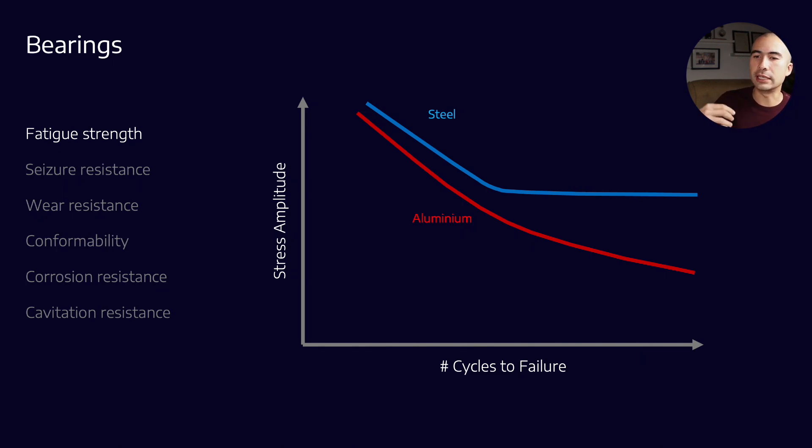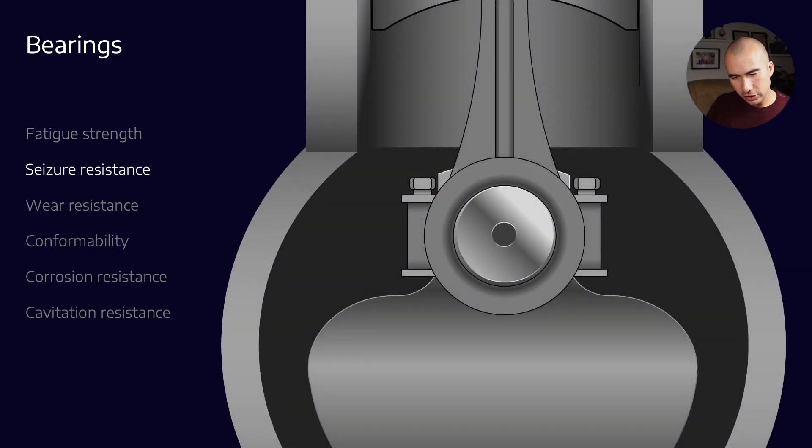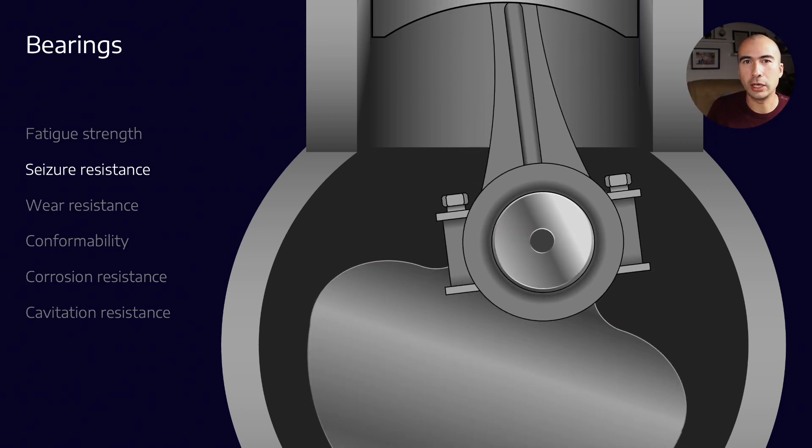What we want is something that can handle that constant cycling. The other thing that we want is seizure resistance. Let's think about what happens to a crankcase bearing if it does seize. Again, clockwise motion—what happens if that bearing stops rotating in its housing? You've got all this force on the power stroke being pushed through the connecting rod.